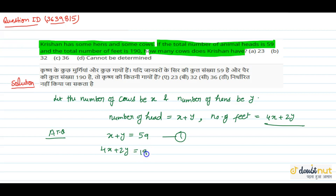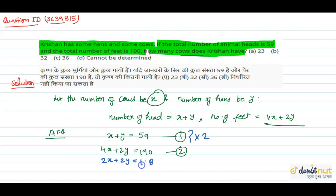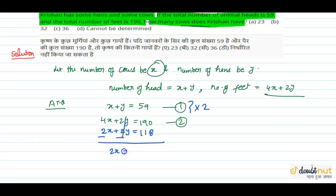Now we solve for x and y. We need to eliminate y, so we multiply equation one by 2: 2x plus 2y equals 118. Subtracting from the second equation, 2y cancels, giving 2x equals 72, so x equals 36. The total number of cows is 36 — option C is correct.